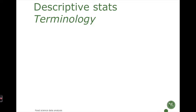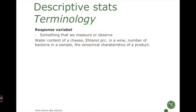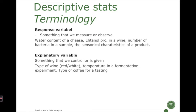A response variable is something that we measure or observe — for instance the water content of a cheese, the alcohol content of a wine, the number of bacteria in a sample, or the sensorial attributes of a given product. An explanatory variable is something that we control or something that is given — examples would be type of wine (red or white), the temperature in a fermentation experiment that we control, or the type of coffee that we are tasting.